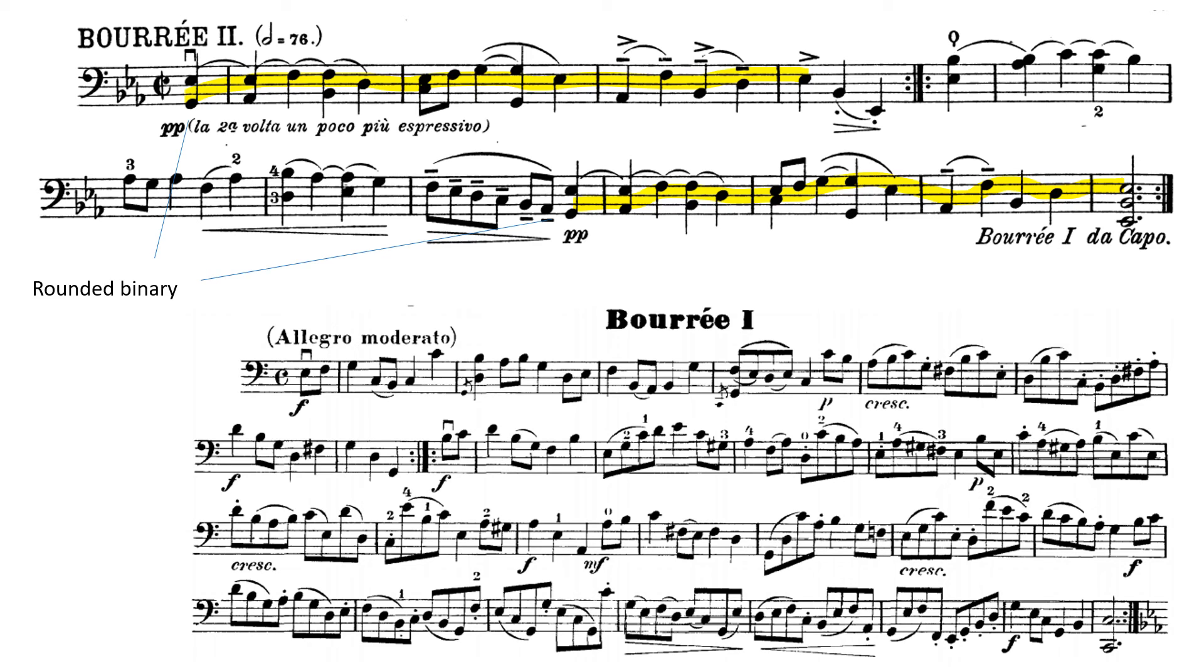Okay, we repeat the A part. Now listen to this closing gesture. Because that's coming back at the end of the B part. Notice the B part is moving away from the home key of C major. There are sequences. And here's the closing gesture. That's the same as the ending of the A part. So this is a balanced binary. The endings are using the same material.